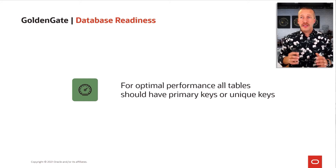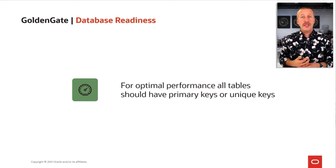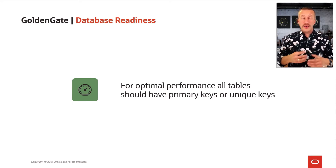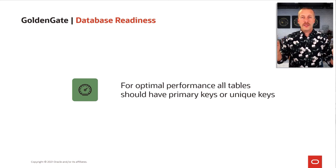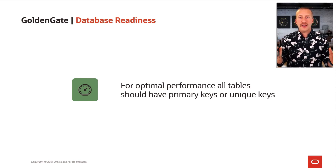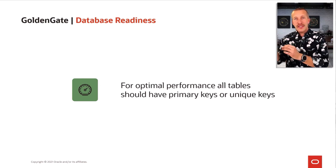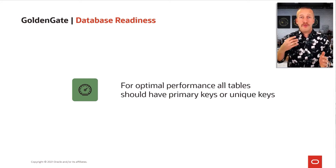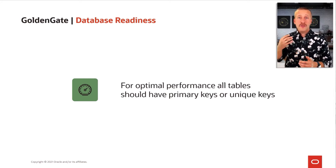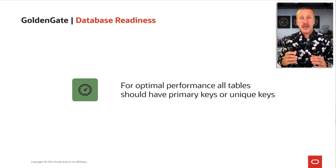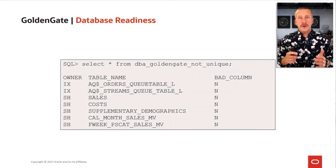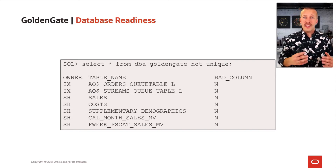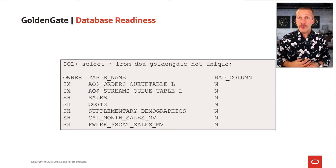Something else to be aware of is that for optimal replication performance, all tables in the database should have primary keys or unique keys. If a table has no primary key or unique key, you can still replicate data. But what Golden Gate will do is form a surrogate key from all columns in the table that are less than 4000 bytes and use that as a key. Most likely, there is no matching index on the target database for all those columns, meaning replication will need to full-scan the table every time there is a change — and this can really hurt replication performance. There is a view called DBA_GOLDENGATE_NOT_UNIQUE which lists all objects that do not have a proper primary key or unique key constraint.